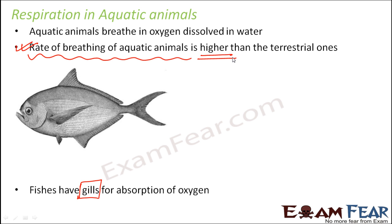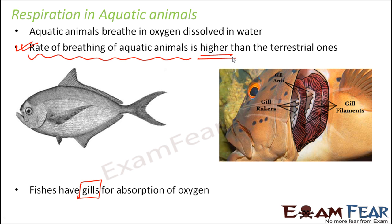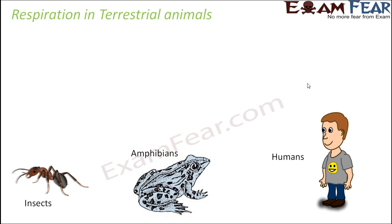That is why their rate of breathing is comparatively faster than terrestrial animals. In this picture you can see the gills very closely — this is how the gills look. Now let us consider how respiration happens in other terrestrial animals.